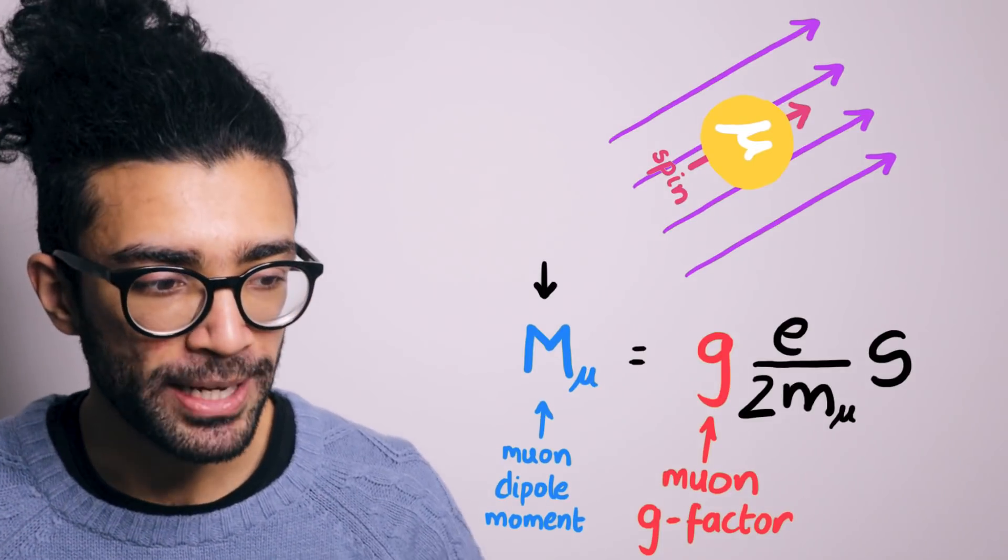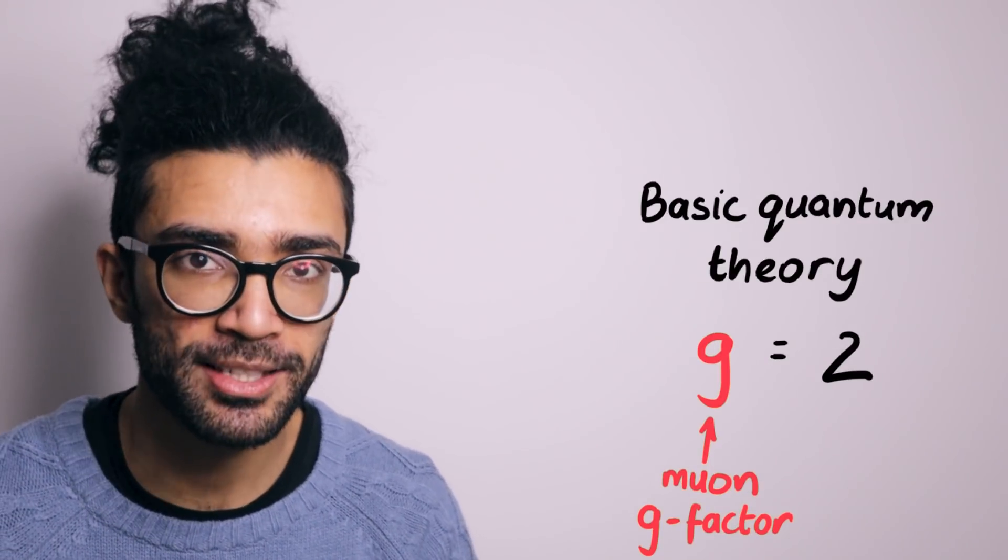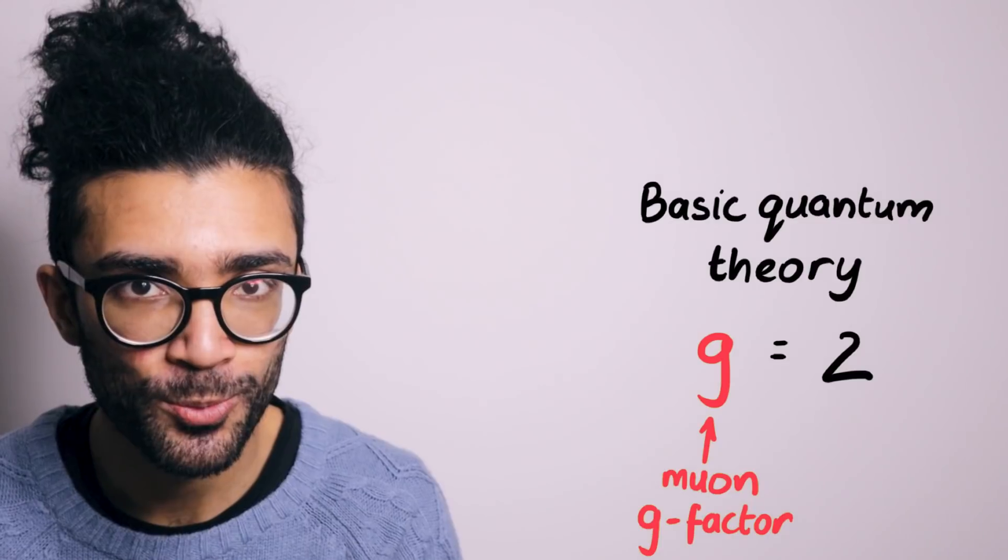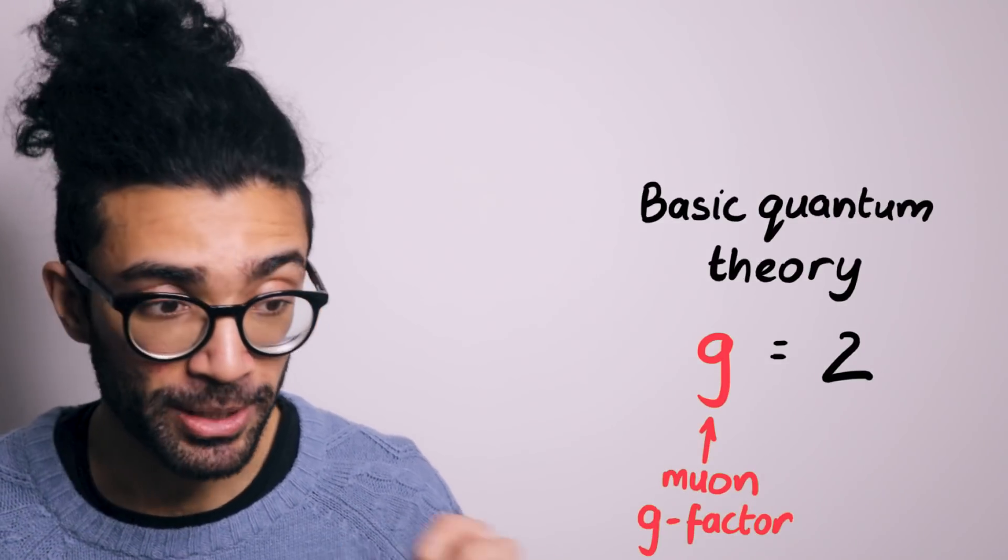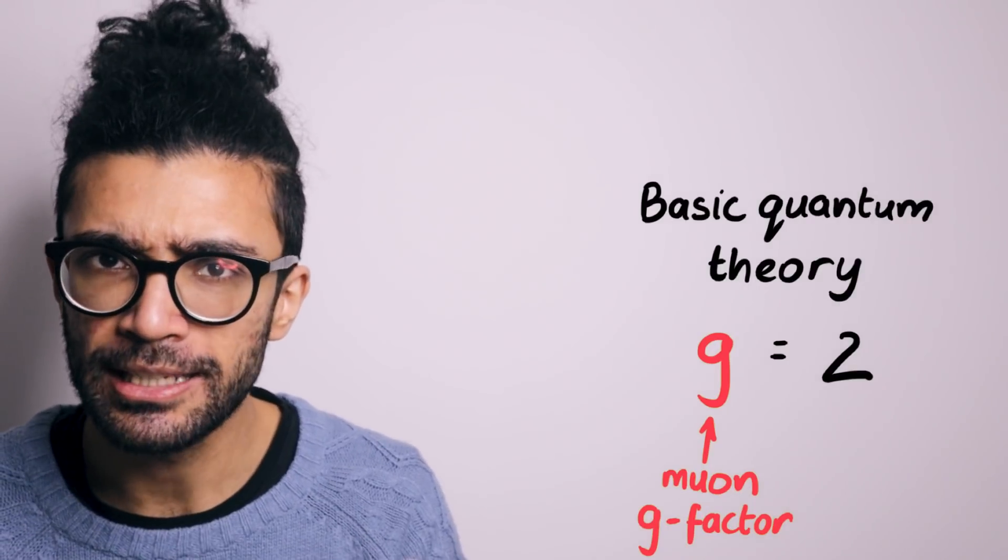The easiest way to think about this is a constant of proportionality between the spin of a muon and its magnetic dipole moment. Now, when we use some basic principles of quantum mechanics, the g factor for a muon is expected to be exactly 2. But it turns out that in real life, the magnetic dipole moment of the muon is not exactly 2. It's slightly larger than 2.